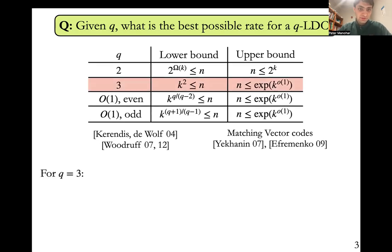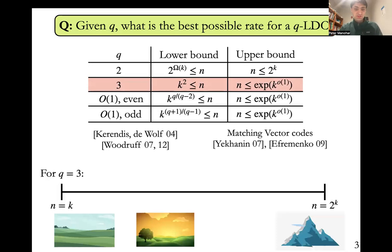Let's zoom in on the q equals three case because this is the first non-trivial value of q that we don't fully understand. For q equals three, we can draw this picture where on the left I have n equals k, which would be the most efficient encoding possible, and on the right I have n equals 2^k, which is a very inefficient encoding. We know that the block length n has to be at least above k squared. And we know there is a construction where it's less than this sub-exponential function, which turns out to be 2^(2^(sqrt(log k log log k))). So yes, this is sub-exponential, but morally it feels closer to an exponential than something polynomial.